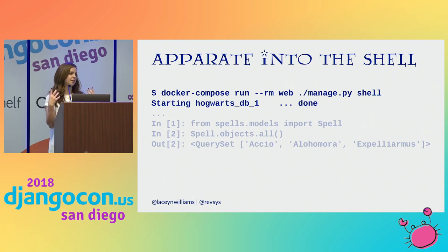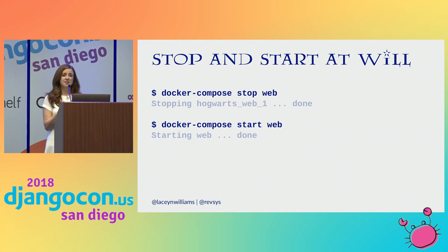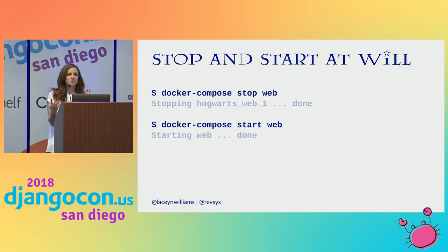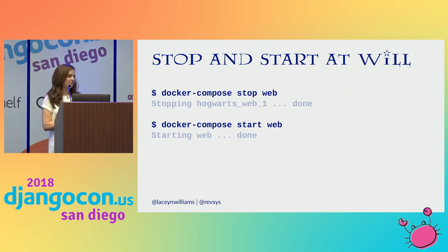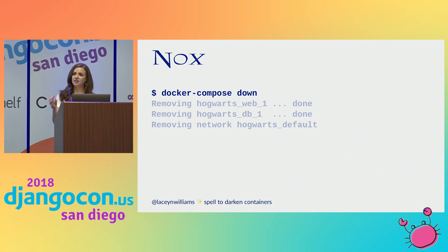You can stop and start your Docker containers at will — so you can stop specifically the web container and restart it specifically. This is very handy if you're using something like Celery: you can have a specific Celery container, and if you're not working on the Celery portion of your project you can stop only the Celery container so you don't get all of the output from it syncing every few minutes. At the end of the day, when you're ready to go home, you run docker compose down and Docker will shut down your containers and trash them for you.